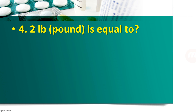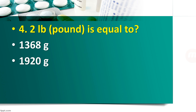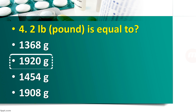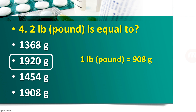Question number 4: 2 pound is equal to — 1368 gram, 1920 gram, 1454 gram, or 1908 gram? The right answer is 1920 gram. 1 pound is equal to around 908 gram, so 2 pound is equal to 1920 gram.